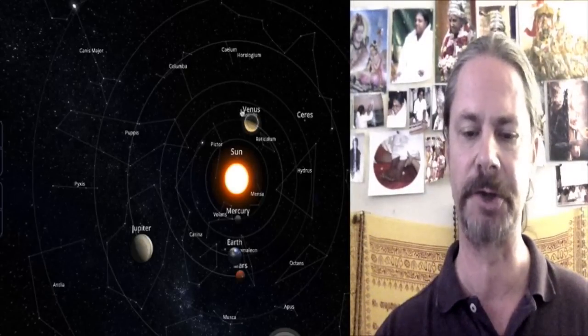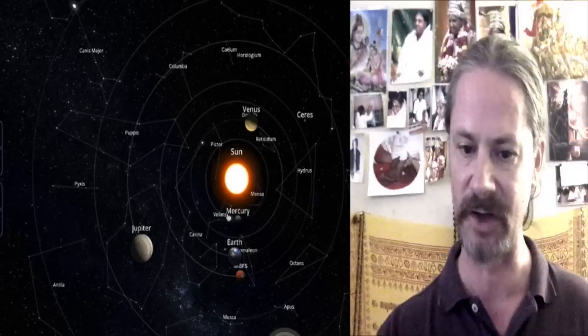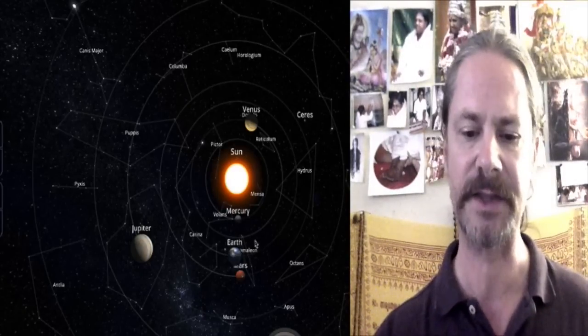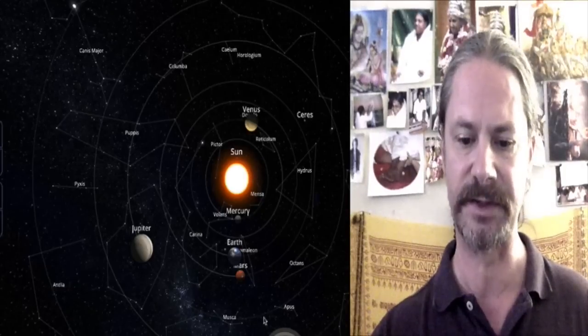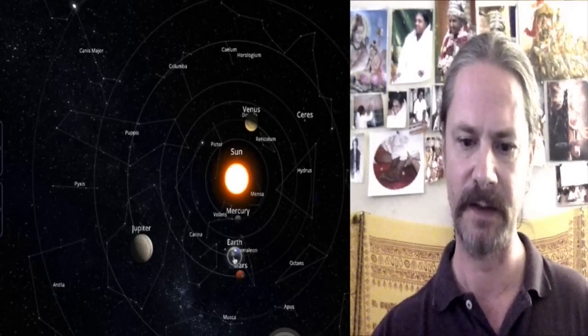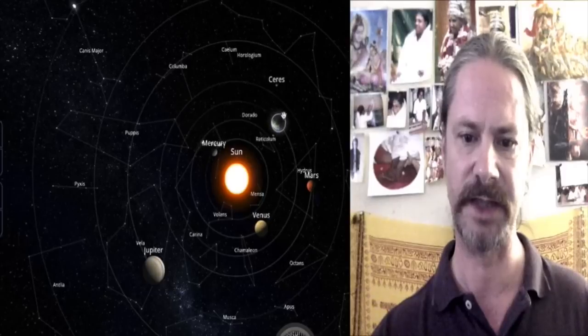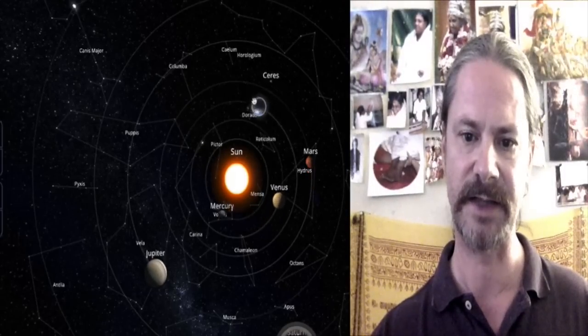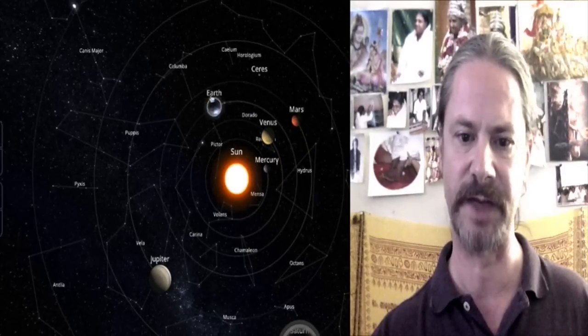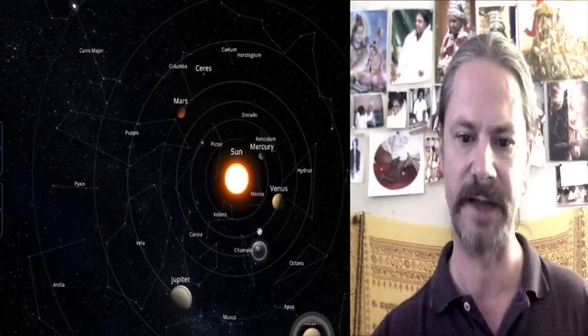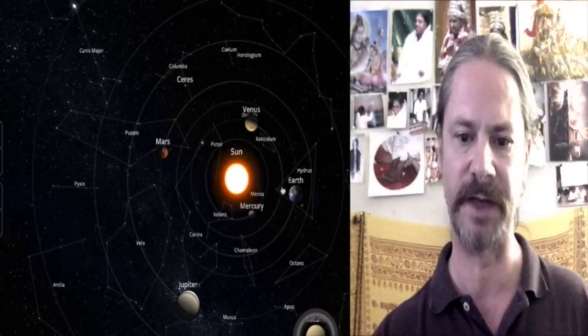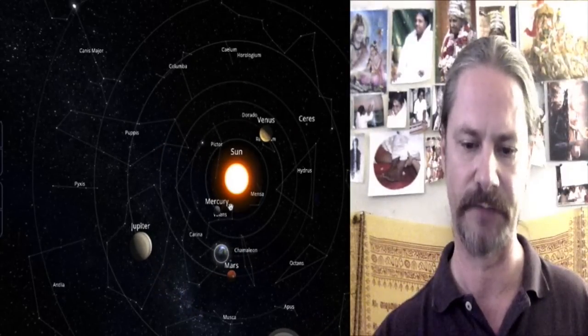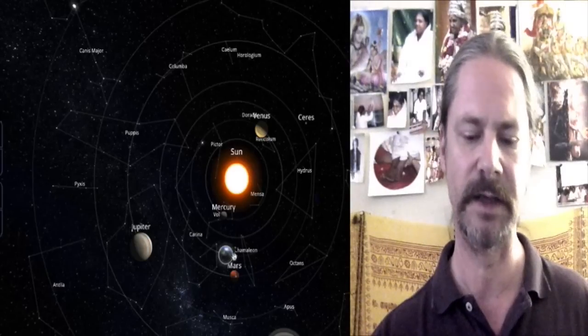Only Venus and Mercury can be retrograde and combust, which means lost in the sun and moving backwards. Every other planet, when it is combust, it's opposite the sun. Like, for example, if I move the earth around this way, we're going to see at this point Jupiter is very combust because it's behind the sun. Then at this time Saturn is very combust because it's behind the sun. And then at this time Mars is very combust because it's behind the sun. So this is how retrograde and combustion work relative to the planets.